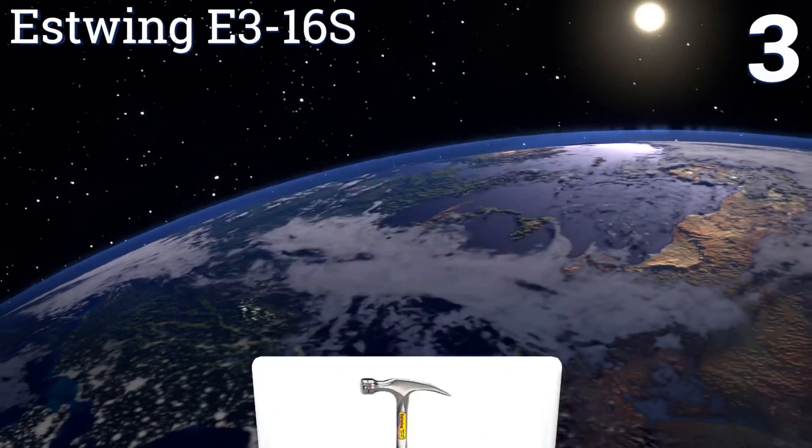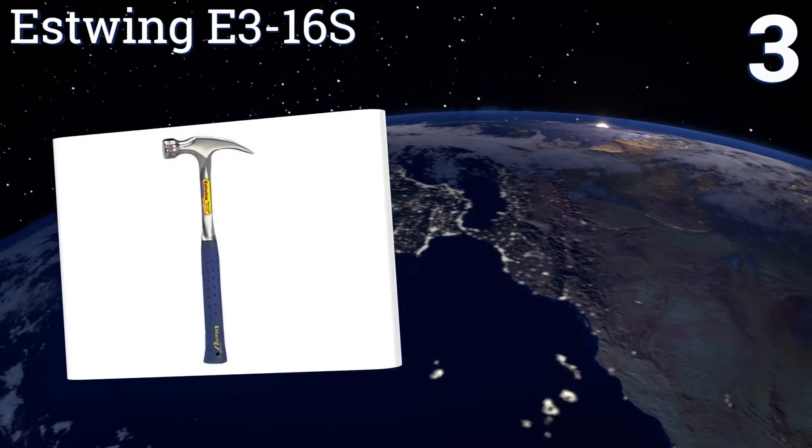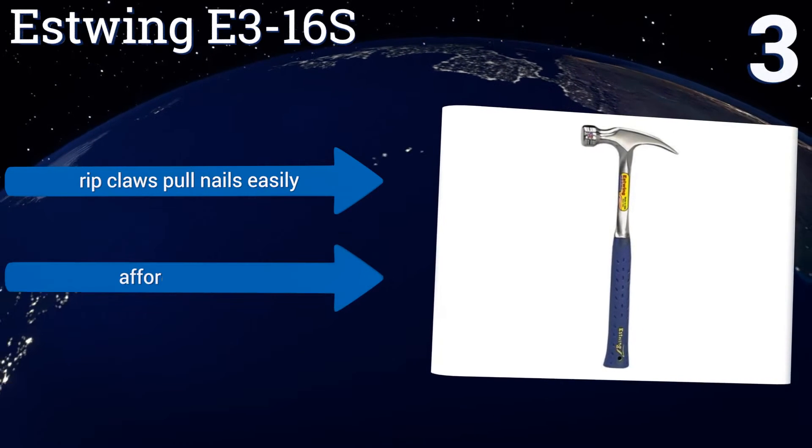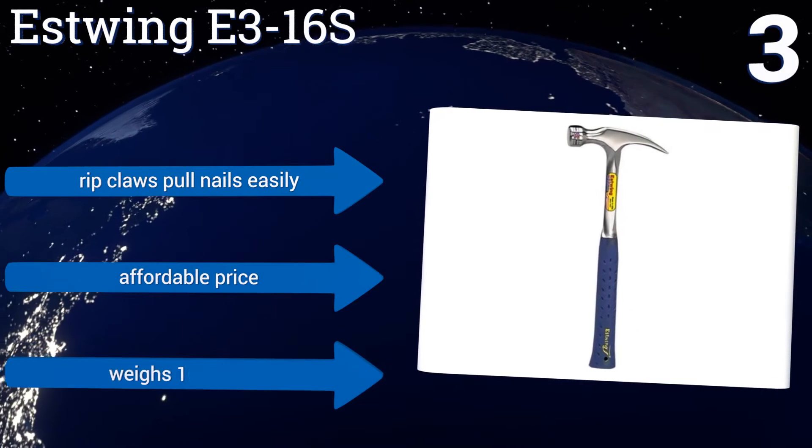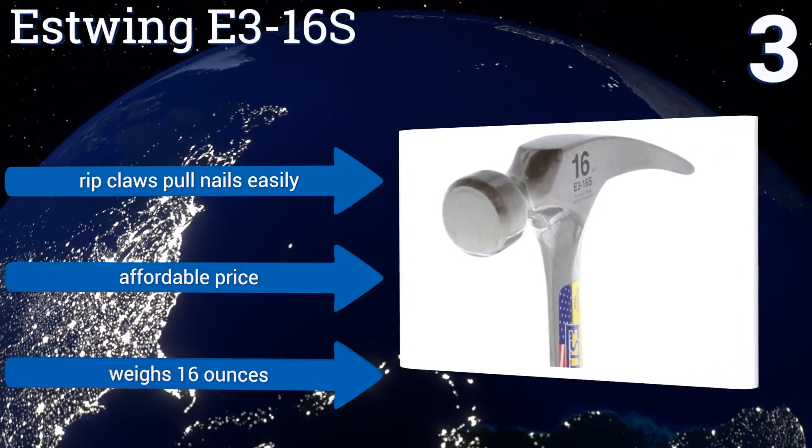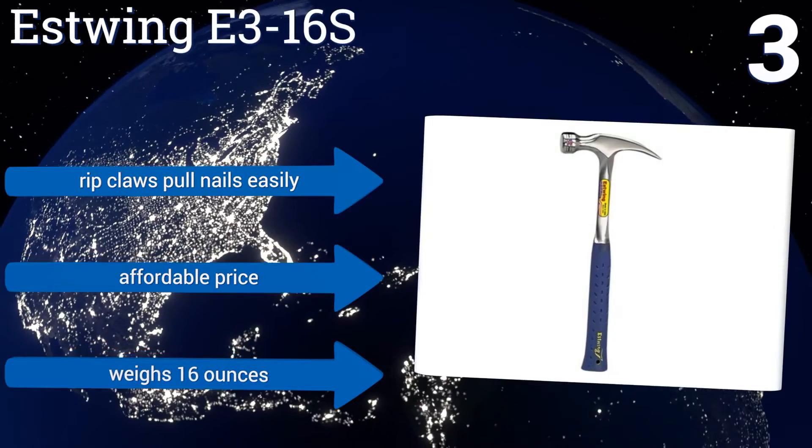Nearing the top of our list at number three, made in the USA since the 1920s, the Estwing E3 16S is actually one piece of solid steel, meaning there's no chance of the head coming loose from the neck as is sometimes the case with other hammers. It's an extremely durable tool that will last you a lifetime. Its rip claws pull nails easily and it's affordably priced. It weighs 16 ounces.